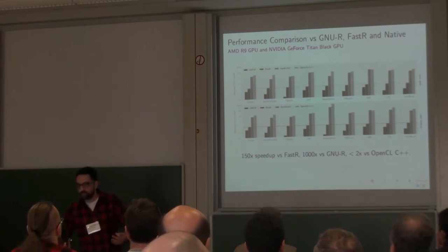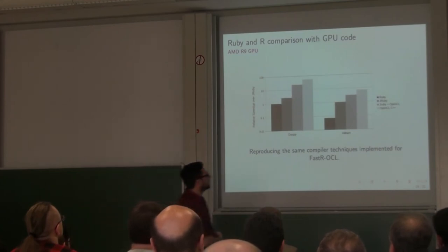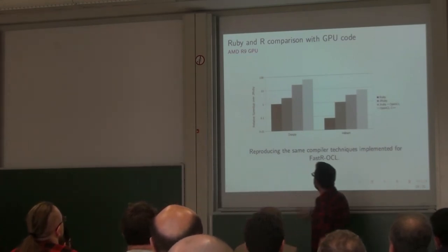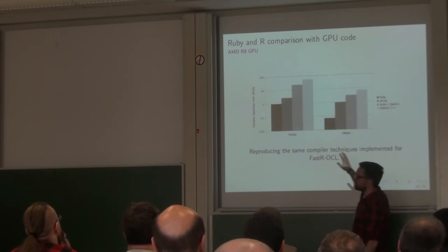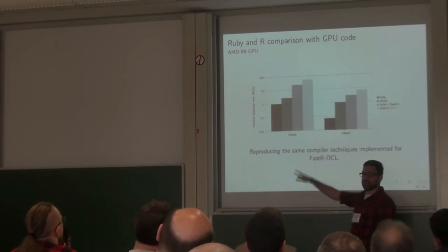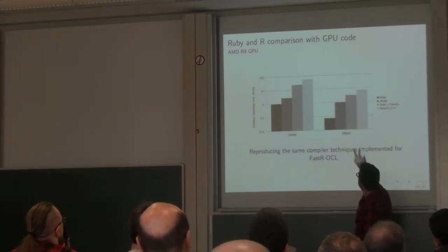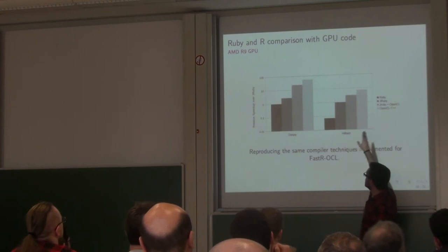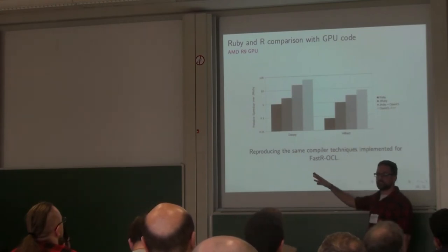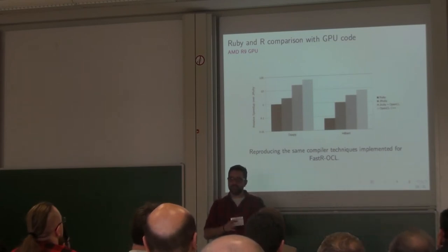The Ruby project is a work in progress. We have similar speedups. In this case, our baseline is harder because JRuby is faster than Fast R. The difference between my version and the native code is still about 2x slowdown, so we are in the same order of magnitude as the R results.